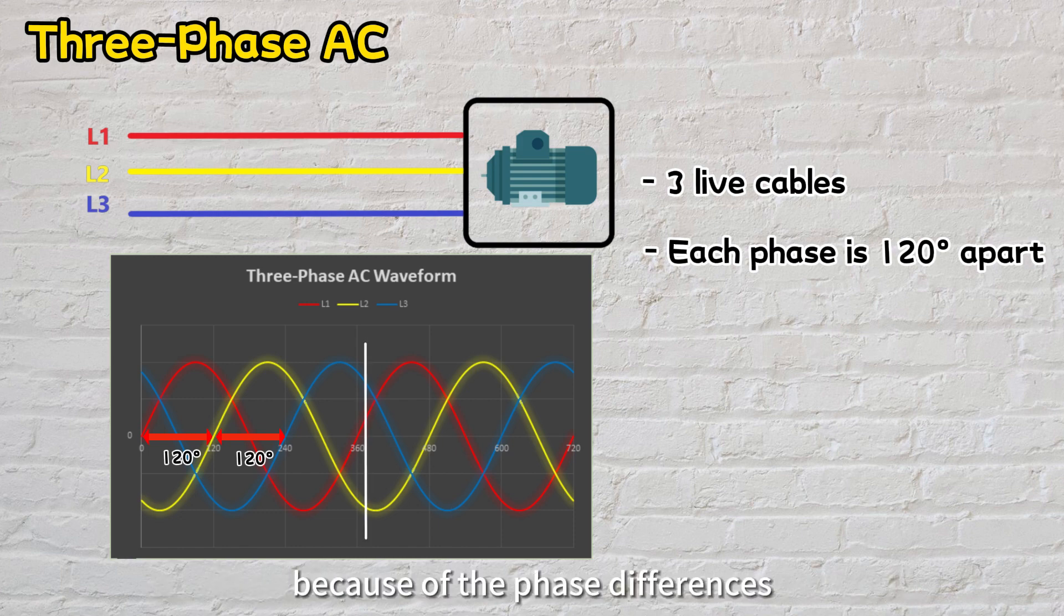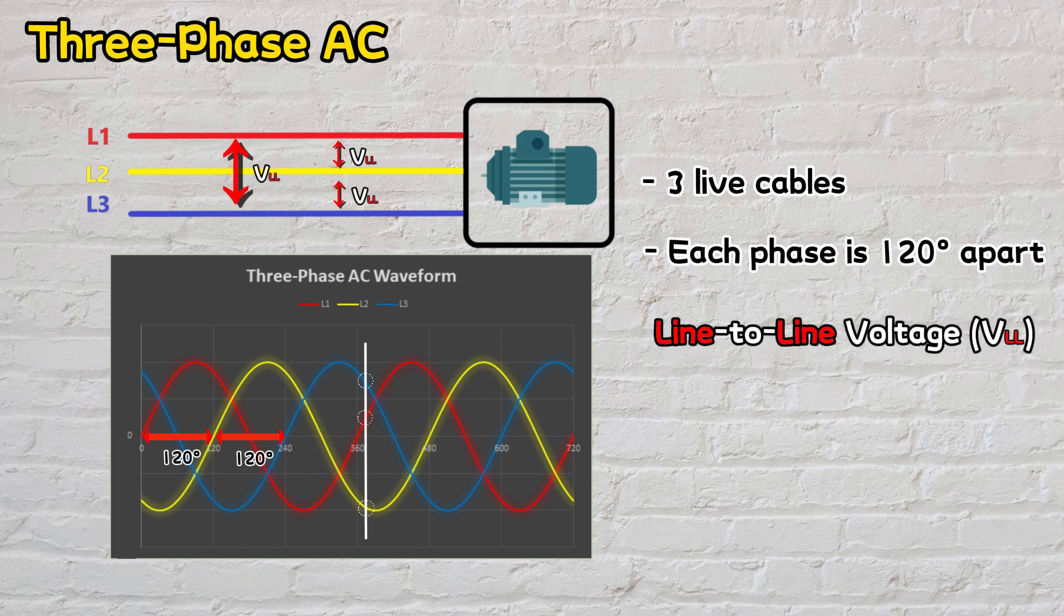Because of the phase differences, the voltage of each phase is different at any instant. This creates a new voltage level known as line-to-line voltage, or VLL.